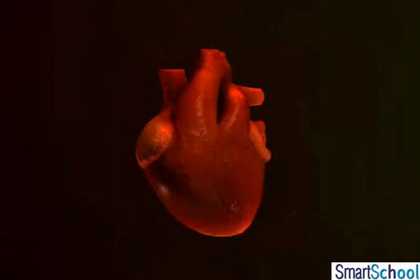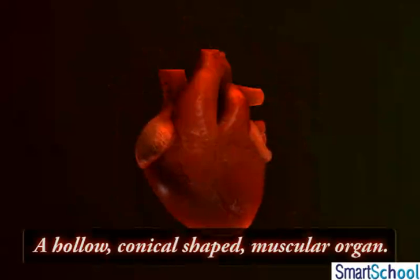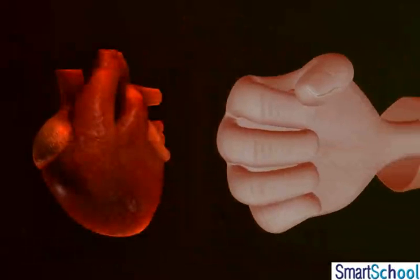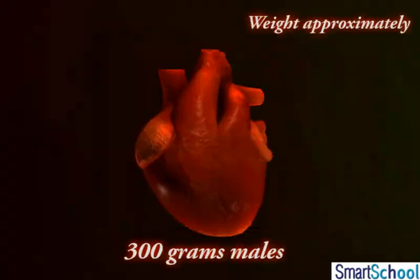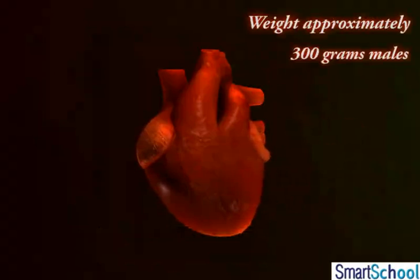The human heart is a hollow, conical-shaped muscular organ roughly the size of our clenched fist. It is reddish-brown in color and weighs approximately 300 grams in males and 250 grams in females.